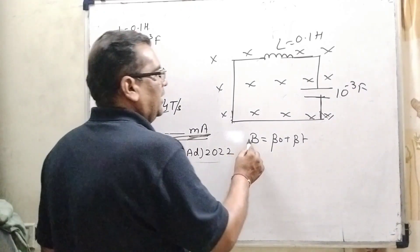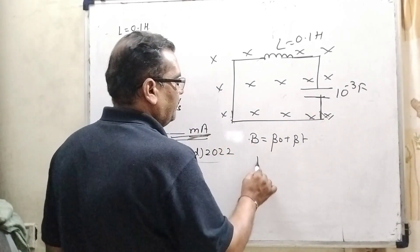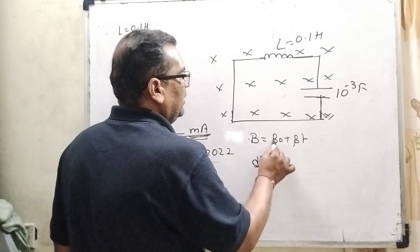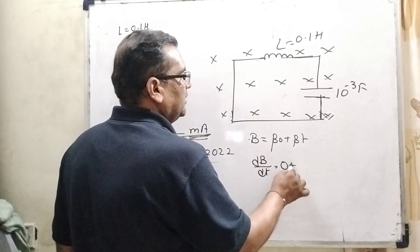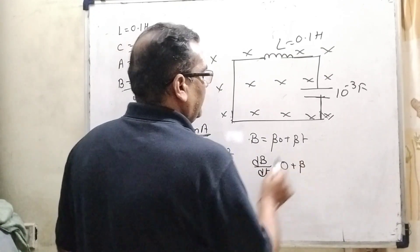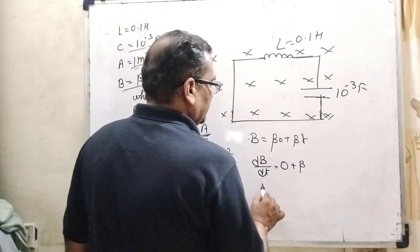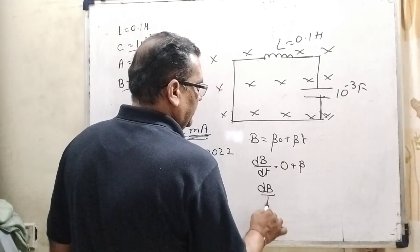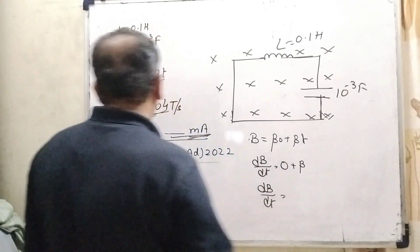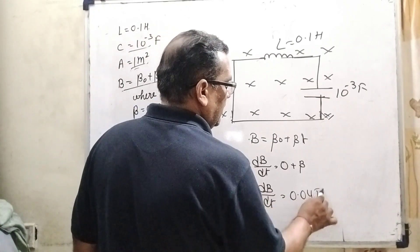Firstly, magnetic field B equal to B0 plus beta into t. Differentiate with respect to t, then dB by dt. Here B0 is constant, and beta differentiation with respect of t is 1. So therefore, dB by dt equals beta, and what is the value of beta? 0.04 Tesla per second.